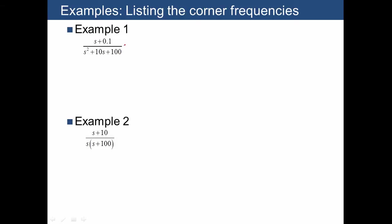Let's do two examples to illustrate how to factor transfer functions and list out the corner frequencies. Here we want to take s plus 0.1 and divide by 0.1, which means that to keep everything balanced we'll need to multiply by 0.1. We'll also want to group 100 with the second order term, which means we also need to divide by 100. This 0.1 divided by 100 is going to give us a thousand times s to the zero.